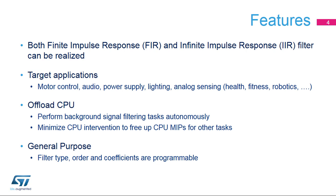Filter functions FIR and IIR can be realized by the FMAC. Typical applications requiring these filters are motor control, audio, power supply, lighting, and analog sensing. The FMAC offloads the CPU by executing background signal filtering tasks autonomously, thus freeing up the CPU MIPS for other tasks.